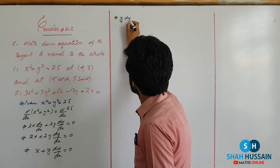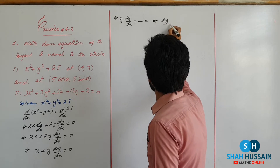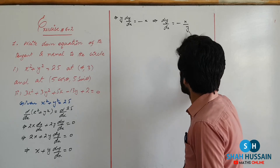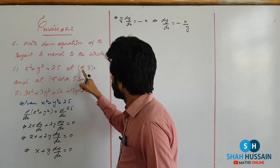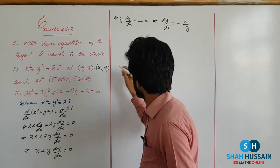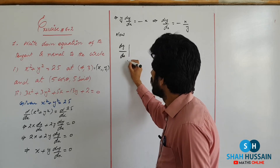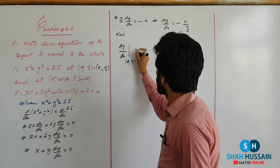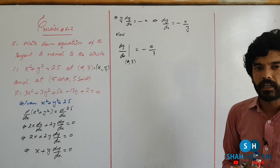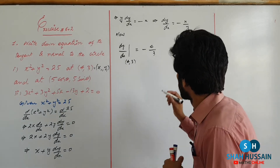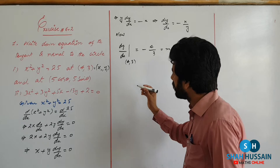Yahan se y dy/dx = -x, which implies dy/dx = -x/y. Ab hume calculate karna hai derivative at point (4, 3). Yahan x₁ = 4, y₁ = 3 hai. Toh dy/dx at (4,3) = -4/3. Geometrically, derivative slope ko represent karta hai, toh slope m = -4/3.